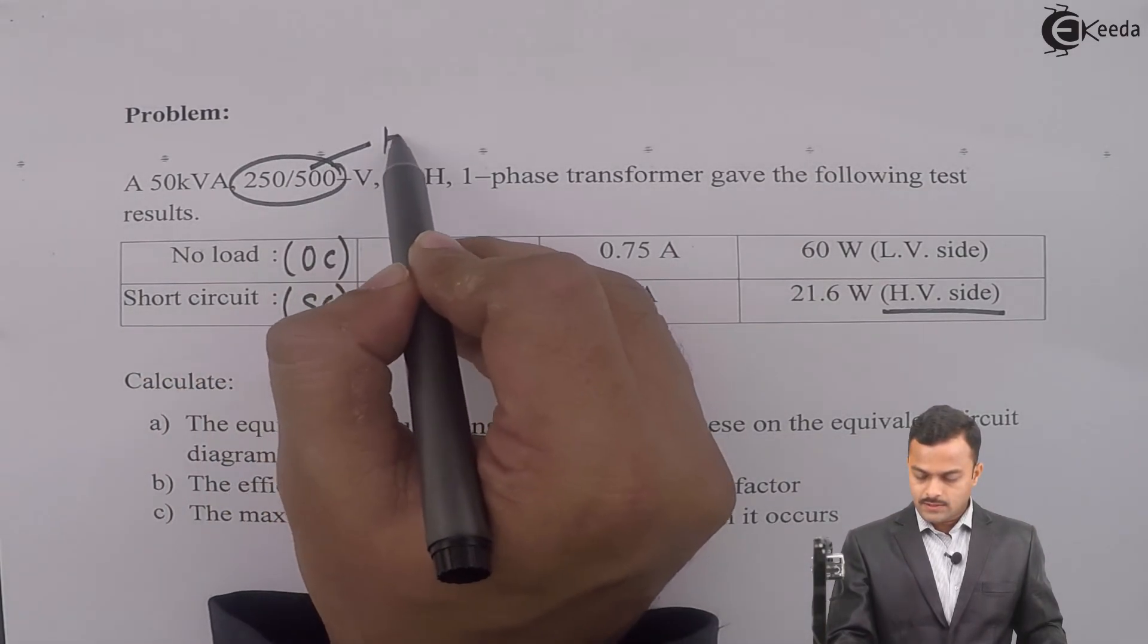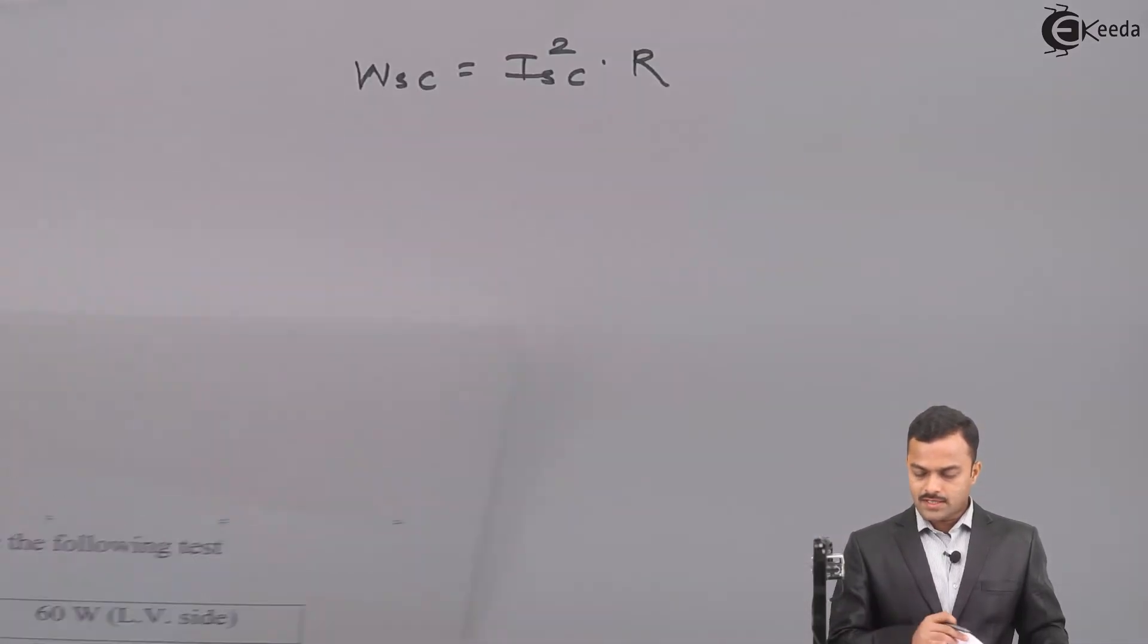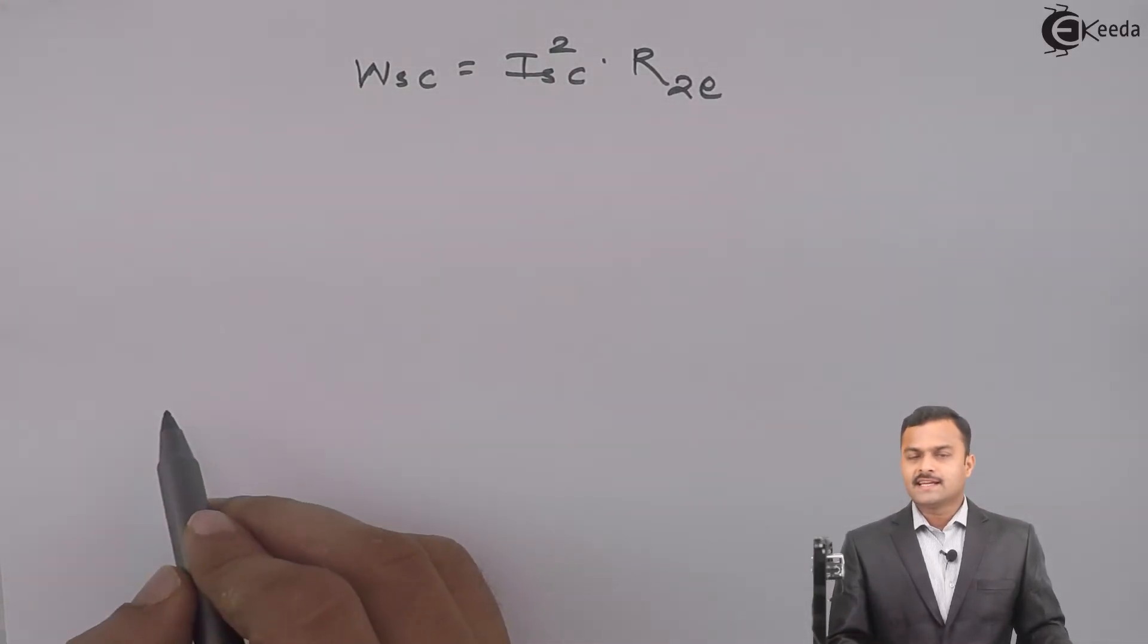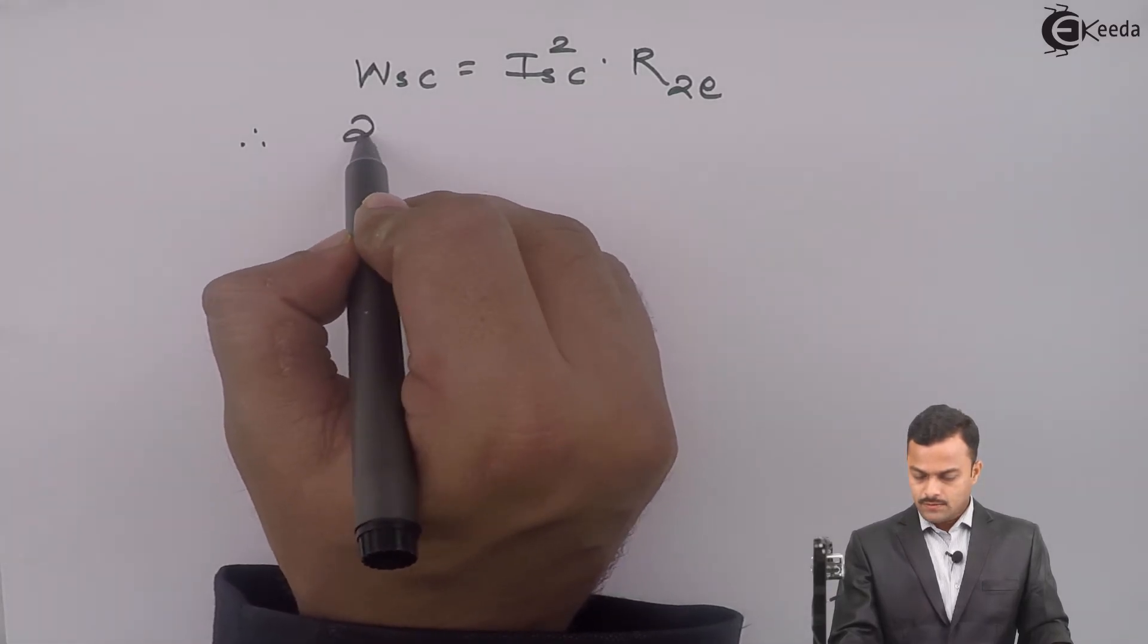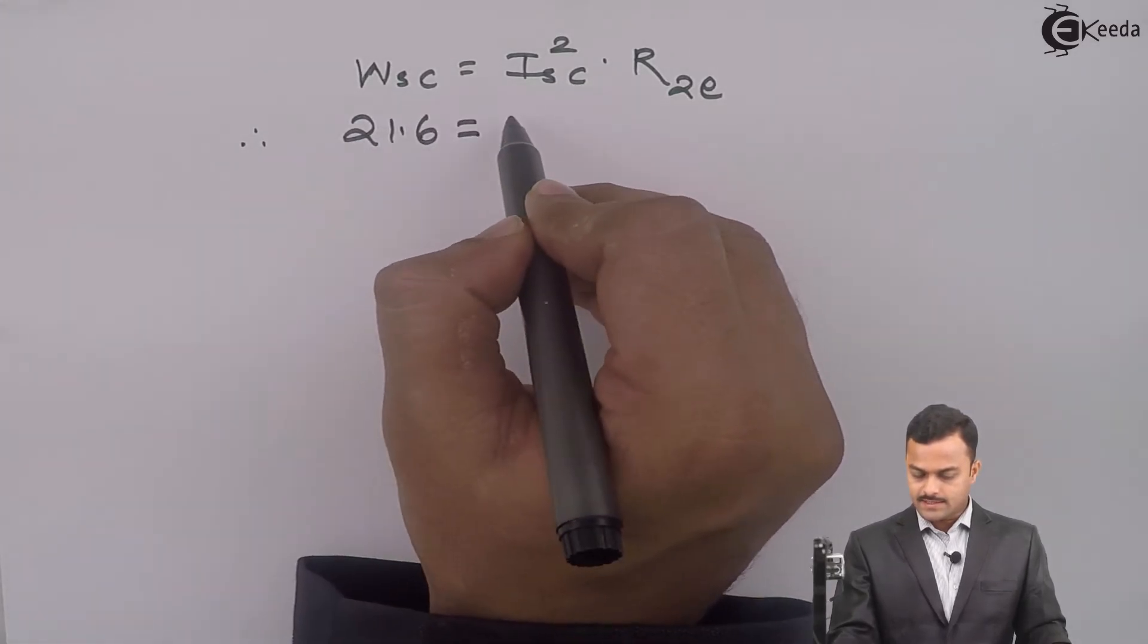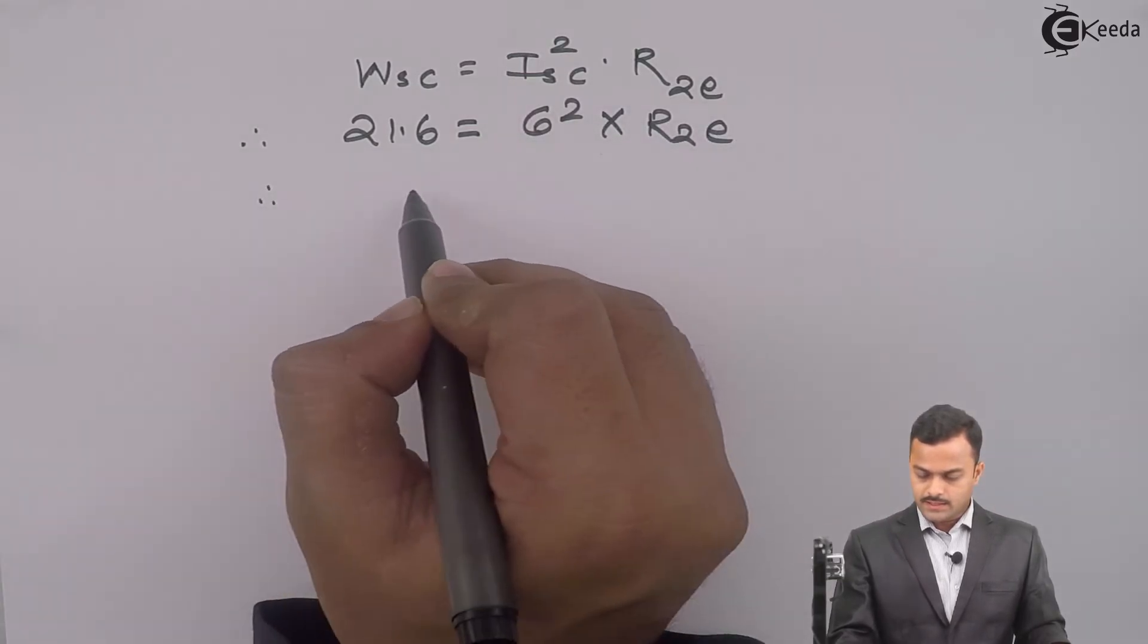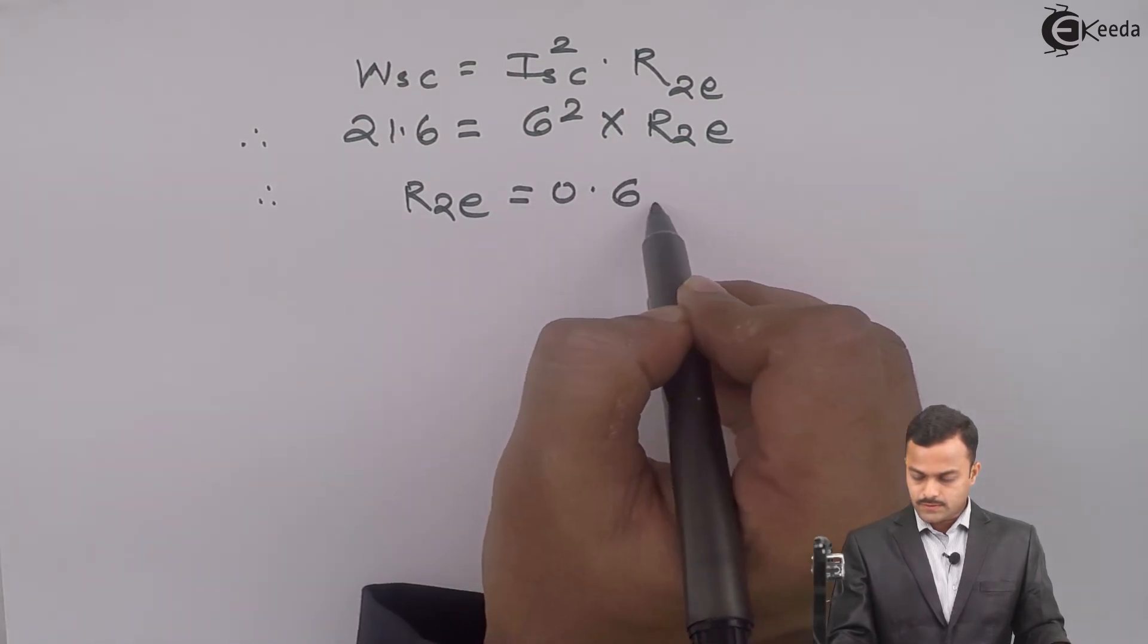Short circuit test is performed on high voltage side. Here, high voltage is secondary. So obviously, I have to take secondary referred resistance R2E. WSC is 21.6, ISC is 6. If you solve, you will get R2E equal to 0.6 ohm.